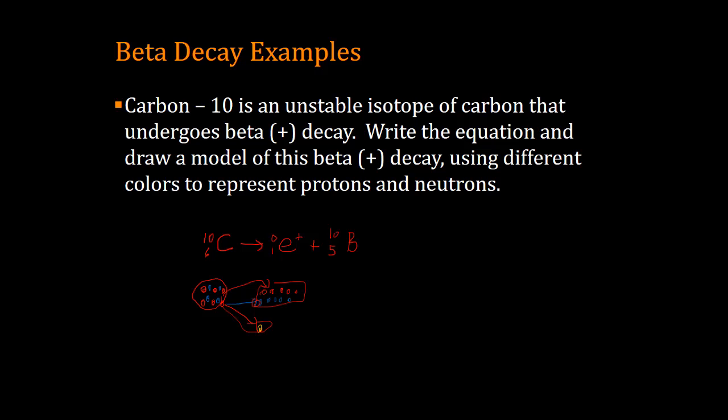And so when we think about a beta plus, beta plus, we give it the symbol E plus, and then it's got a mass number of 0. And we think of it as having an atomic number of positive 1 because it has a positive charge.